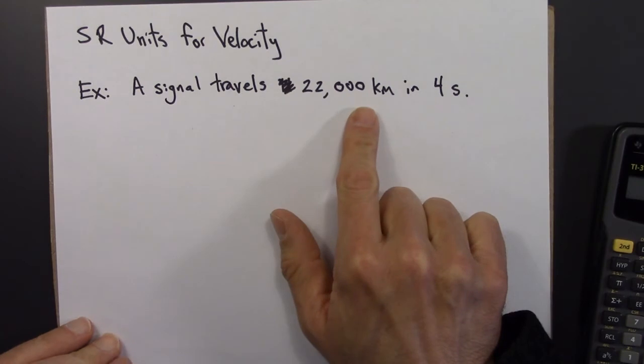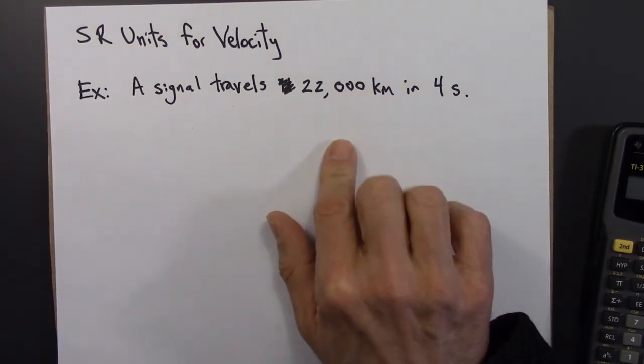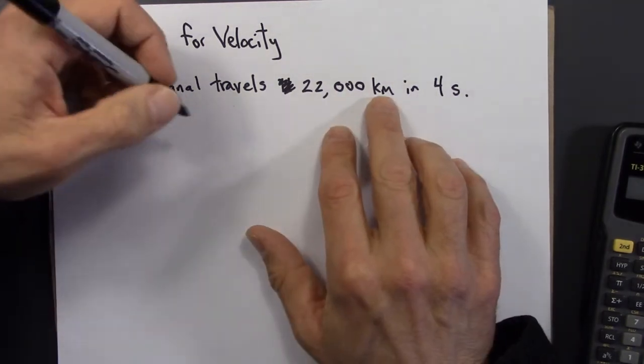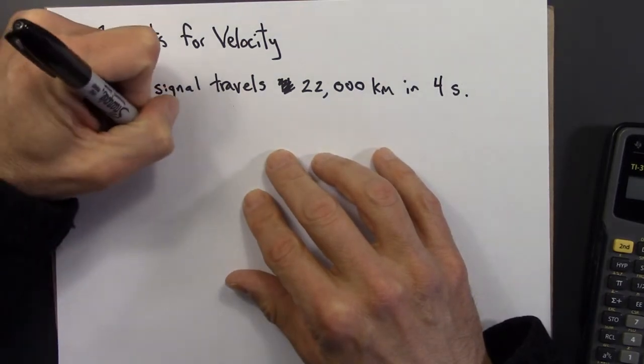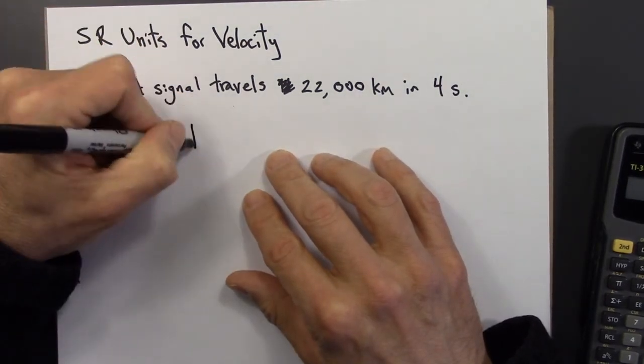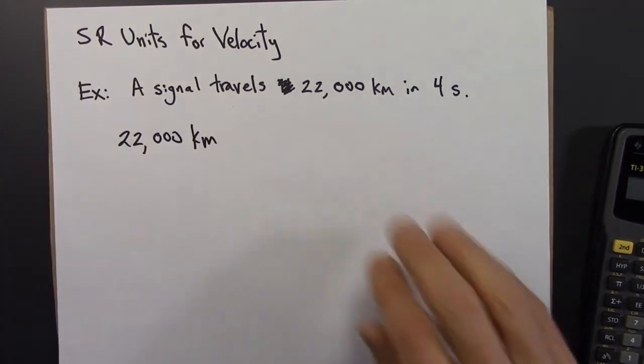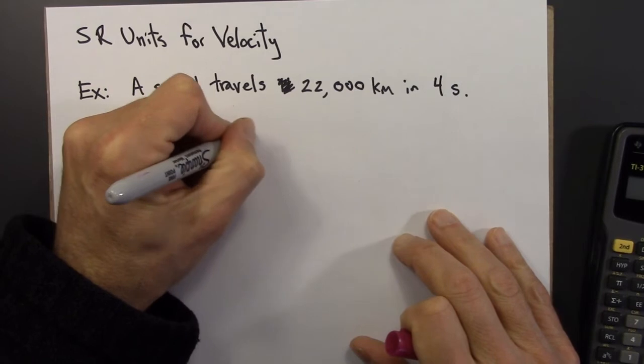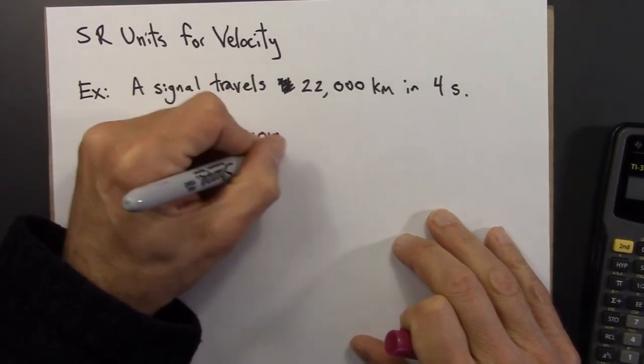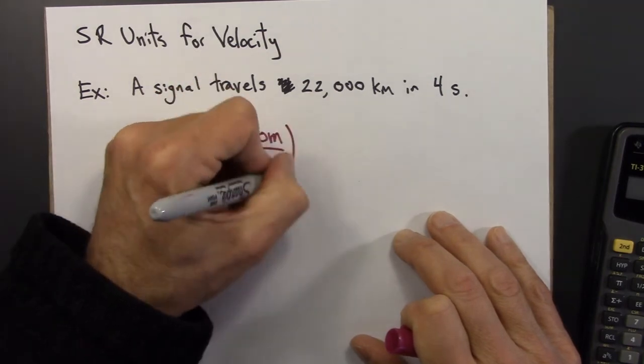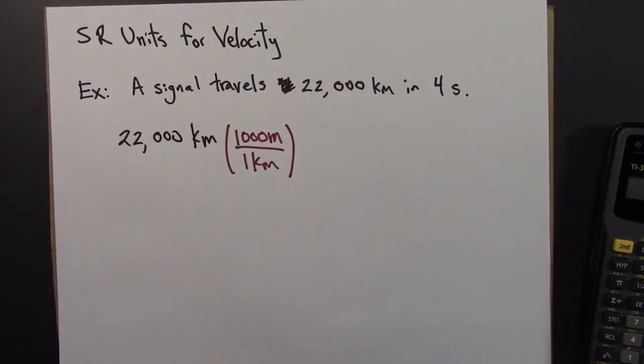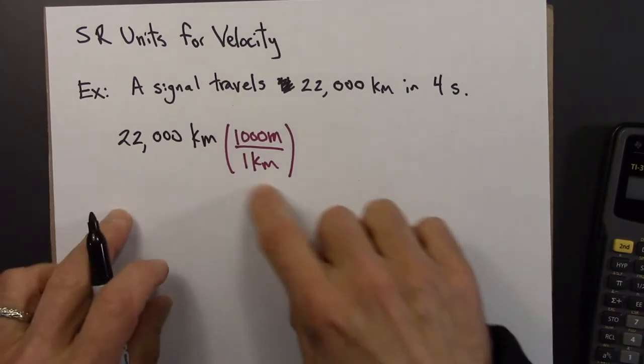Okay, 22,000 kilometers, let's convert that to meters per second. Or let's convert kilometers to meters. So 22,000 kilometers. And there are 1,000 meters in one kilometer. That's my conversion factor.